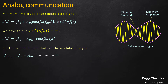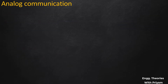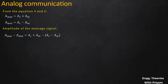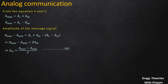From the maximum and minimum amplitudes we can determine Am and Ac. From Equations 4 and 5: A_max − A_min = (Ac + Am) − (Ac − Am) = 2·Am. Therefore the amplitude of the message signal Am = (A_max − A_min) / 2. This is Equation 6.